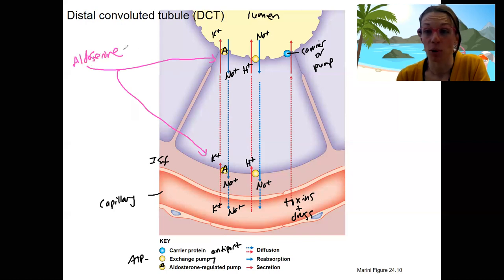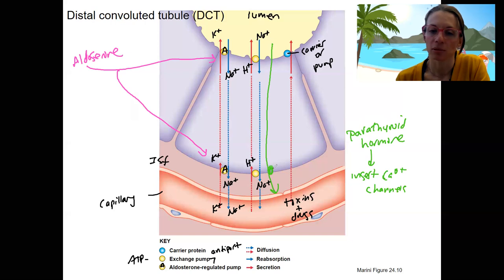The last thing for the distal convoluted tubule is calcium reabsorption. So we want to reabsorb calcium - that means this way. Parathyroid hormone is stimulated by low calcium, remember? So it's going to insert calcium channels. Calcium channel, calcium channel - allows calcium to be reabsorbed. Pretty cool. That's going to allow us to maintain calcium when levels start to get low.